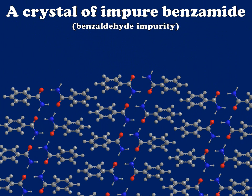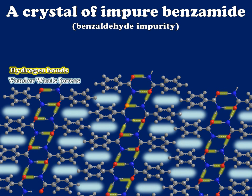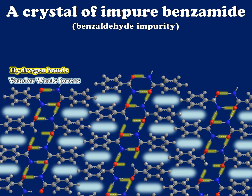Now let's consider the effect of an impurity on the melting point of this particular crystal. We're going to rebuild that crystal of benzamide, but this time I'm going to take that nice network of optimized intermolecular attractions and disrupt it. I'll change the identity of some of these molecules from benzamide to a similar compound, benzaldehyde. When I do this, notice that benzaldehyde doesn't have the NH₂ group necessary to form some of the hydrogen bonds that stabilize the crystal — so those particular hydrogen bonds will be gone. The presence of the benzaldehyde impurity has decreased the total number and intensity of intermolecular attractions holding that bulk crystal together.